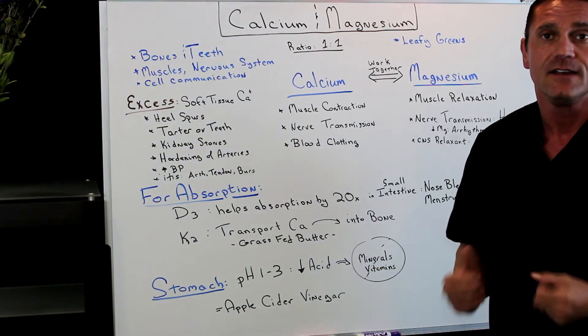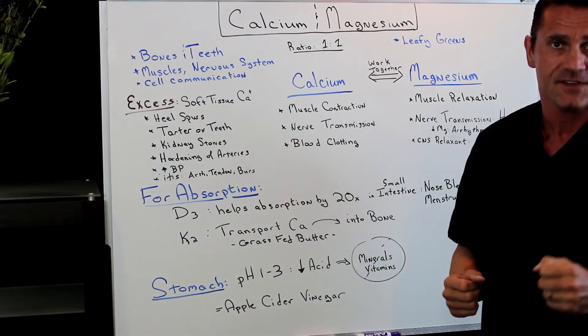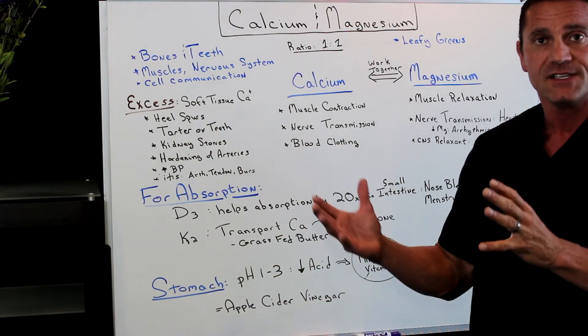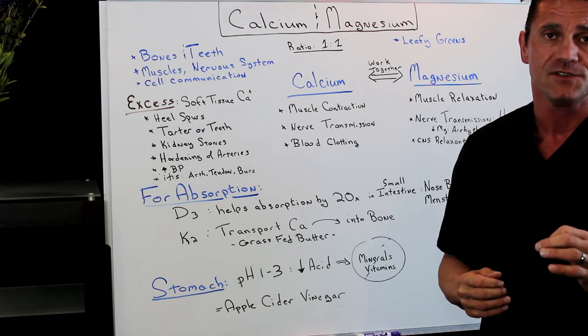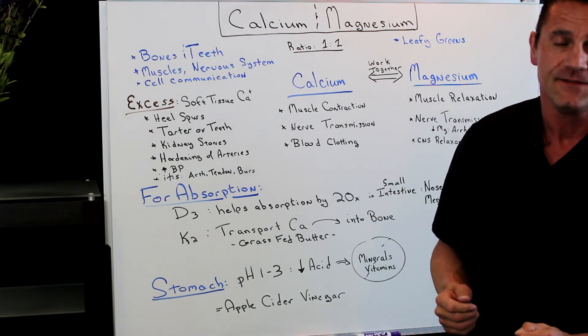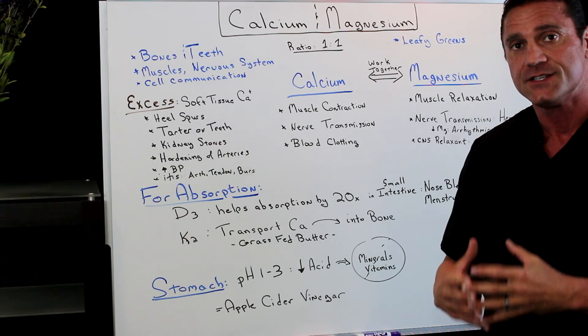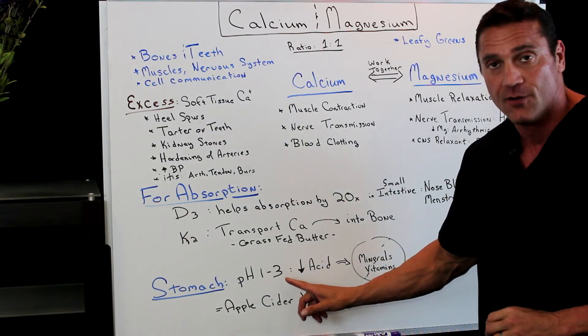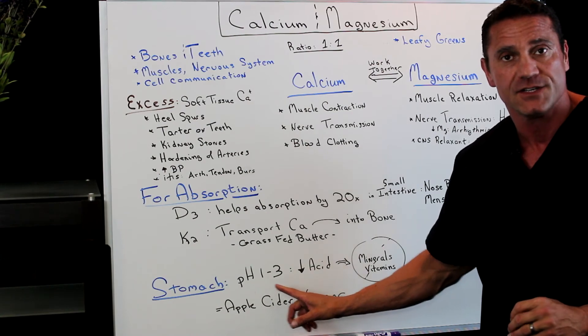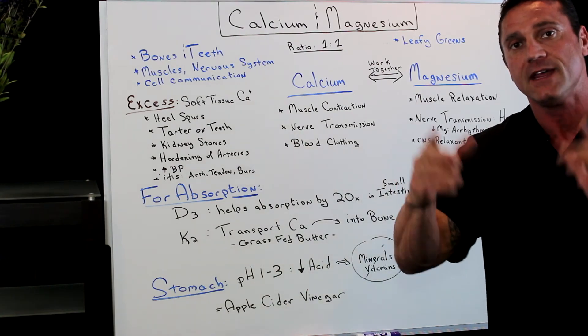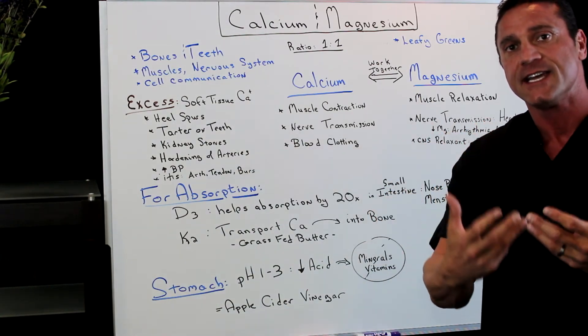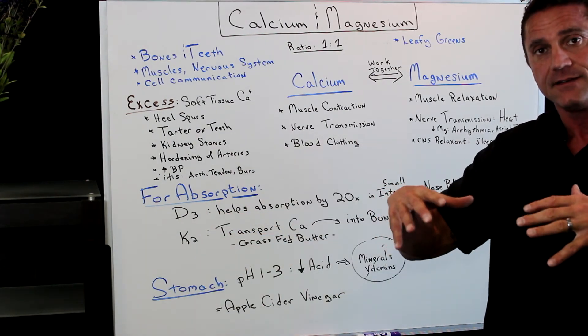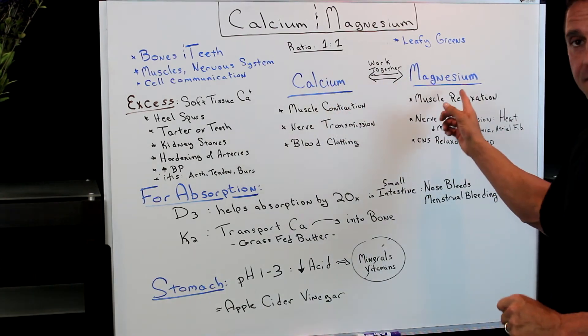So how do you get that? Very easy. I've done a previous video on this. Apple cider vinegar. Wake up in the morning on an empty stomach, take about one tablespoon of apple cider vinegar, wait about 15, 20 minutes before you put food in your system. Because what you want to do, the apple cider vinegar is going to help the pH of your stomach shift more between one and three, become more acidic. So when you actually take in food products, then you're going to absorb the D3 and K2 in conjunction with calcium and magnesium.